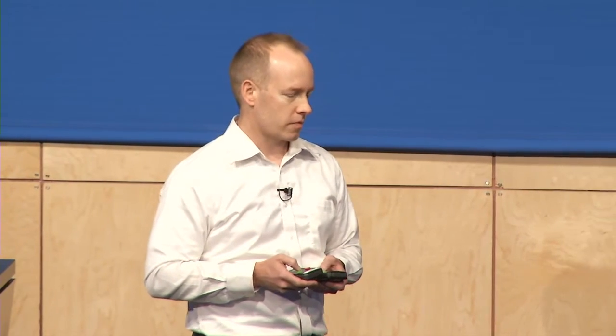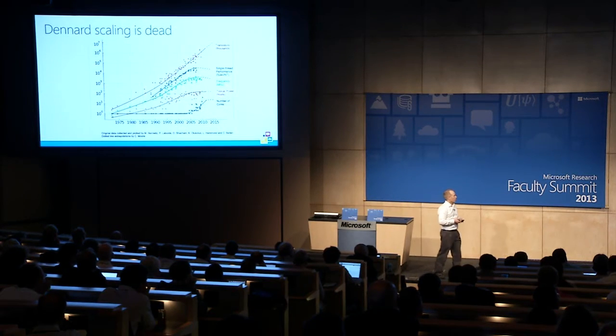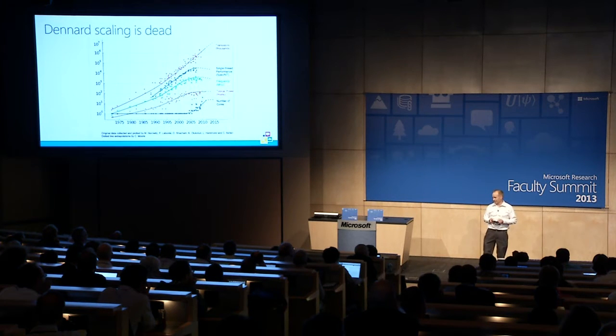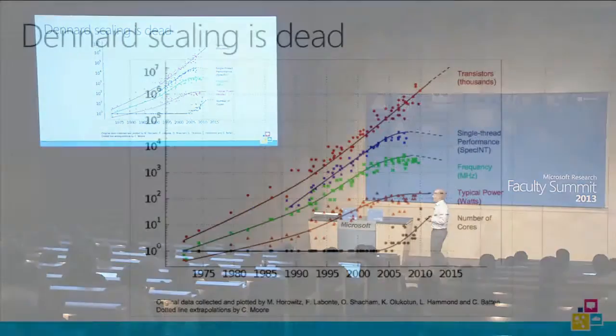We had about three decades of Denard scaling — this is really the underpinning that enables Moore's Law, because if you didn't have this scaling, you'd be in trouble. But there's a catch: Denard scaling is dead. It's failed.